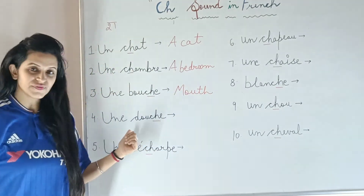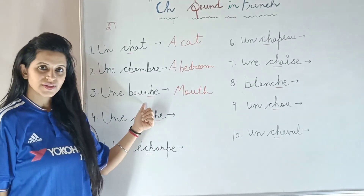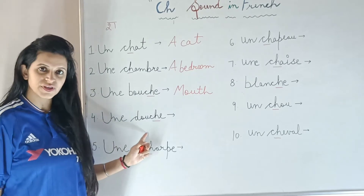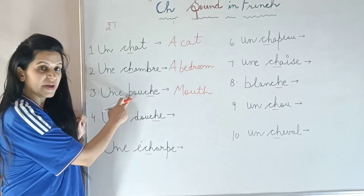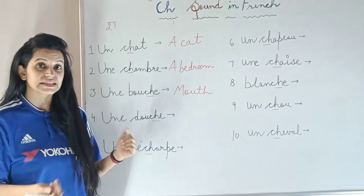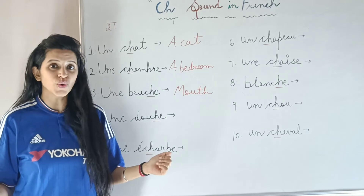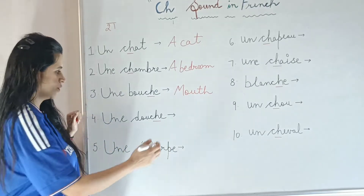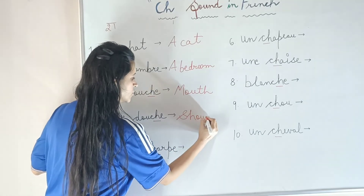The next word is similar to 'bouche'. See the difference — quelle est la différence? Here it's B, and here it's D. So 'bouche' and this one becomes 'douche'. Une douche, which means a shower.